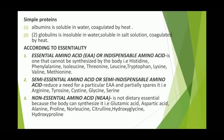Simple proteins: Albumin is soluble in water and coagulated by heat. It is a protein made by the liver that keeps fluid in the bloodstream so it does not leak into other tissues, and carries hormones, vitamins, and enzymes throughout the body. Coagulated by heat means a change from liquid to solid by heat. Globulin is insoluble in water, soluble in salt solution, and coagulated by heat. Globulin is a family of globular proteins with higher molecular weight than albumin, insoluble in pure water but dissolving in dilute salt solutions. Some globulins are produced in the liver while others are made by the immune system.